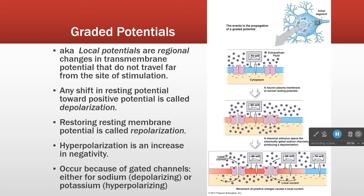Movement in the negative direction we call hyperpolarization — for example, minus 60 to minus 90 is a hyperpolarization. We use the term repolarization to talk about the membrane going back to its resting membrane potential. At the end of an action potential, a cell sitting at plus 30 needs to get back to minus 70; that process is called repolarization.